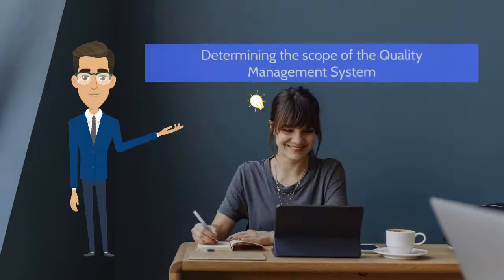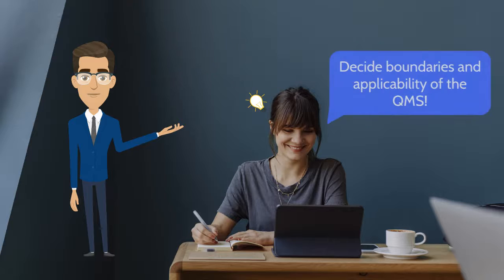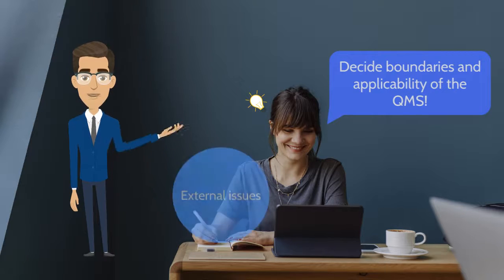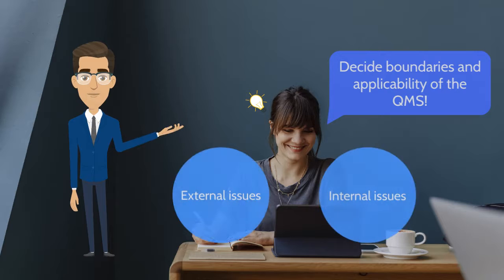For determining the scope of the quality management system, the organization should decide the boundaries and applicability of the QMS, while considering the external and internal issues as mentioned.